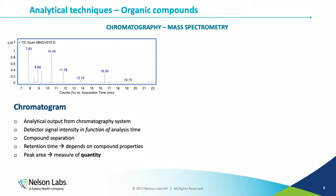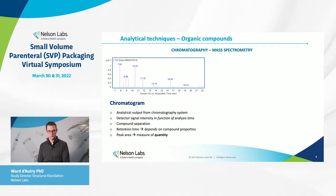For organic compounds, we use a combination of chromatography and mass spectrometry. The chromatography step separates all the extractable compounds present in your extract or drug product. The output is a chromatogram — a signal of the detector as a function of analysis time. That retention time depends on the chemical properties of the compound, and the area of a peak is already a measure of the quantity of the compound.